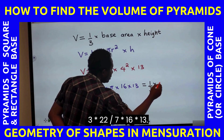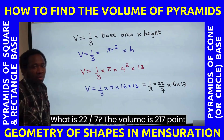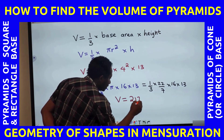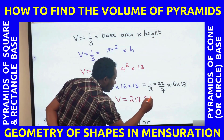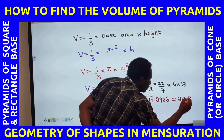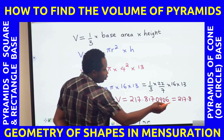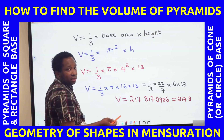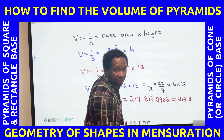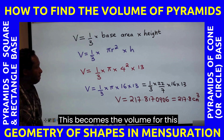The volume is 1 over 3 times 22 over 7 times 16 times 13. Solving this gives 217.817..., which is 217.82 to 2 decimal places, or 217.8 to 1 decimal place. The unit is centimeter cube. This is the volume for this cone.